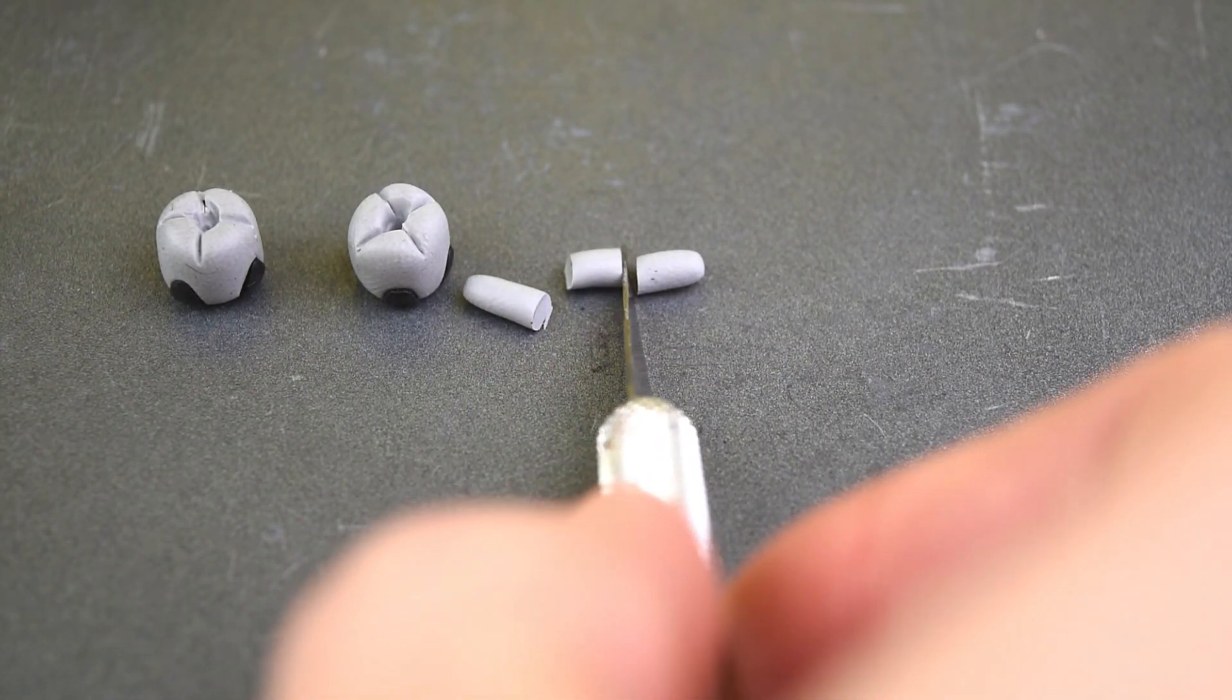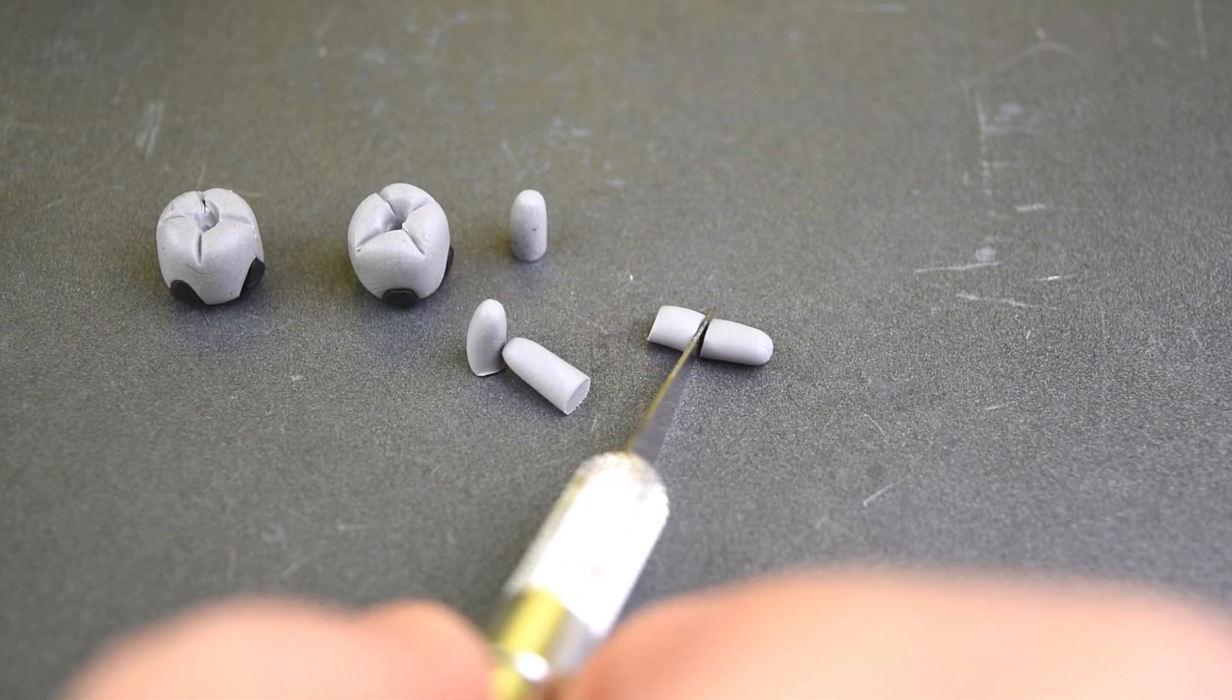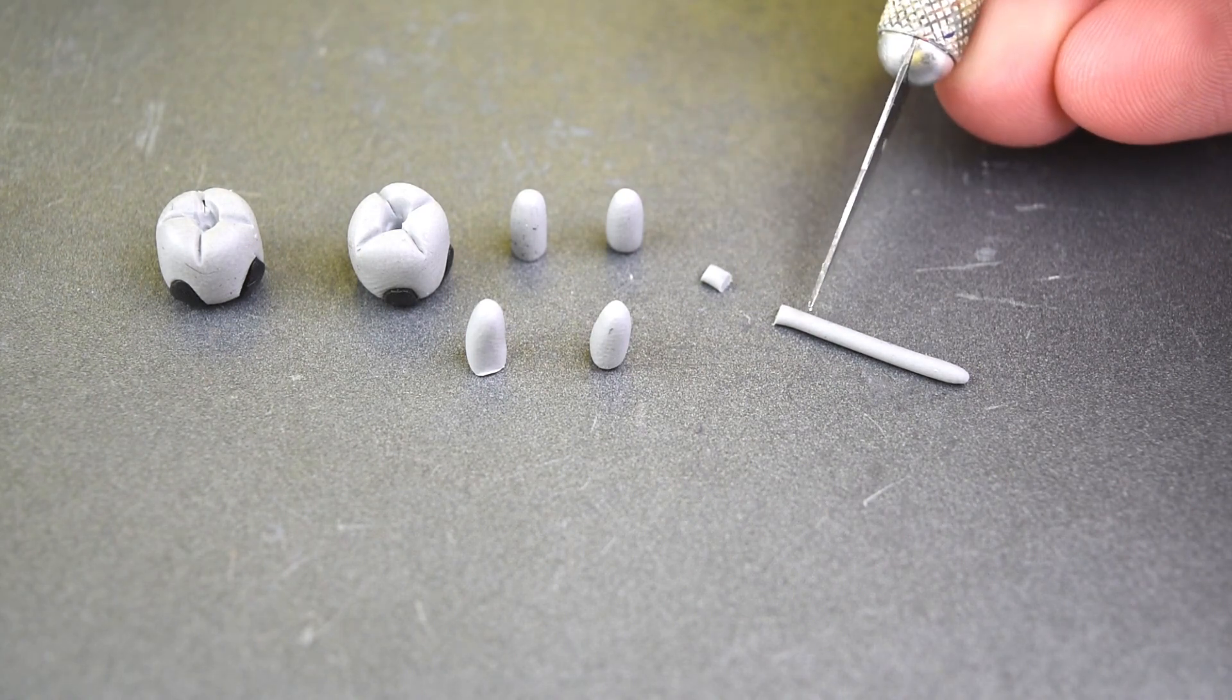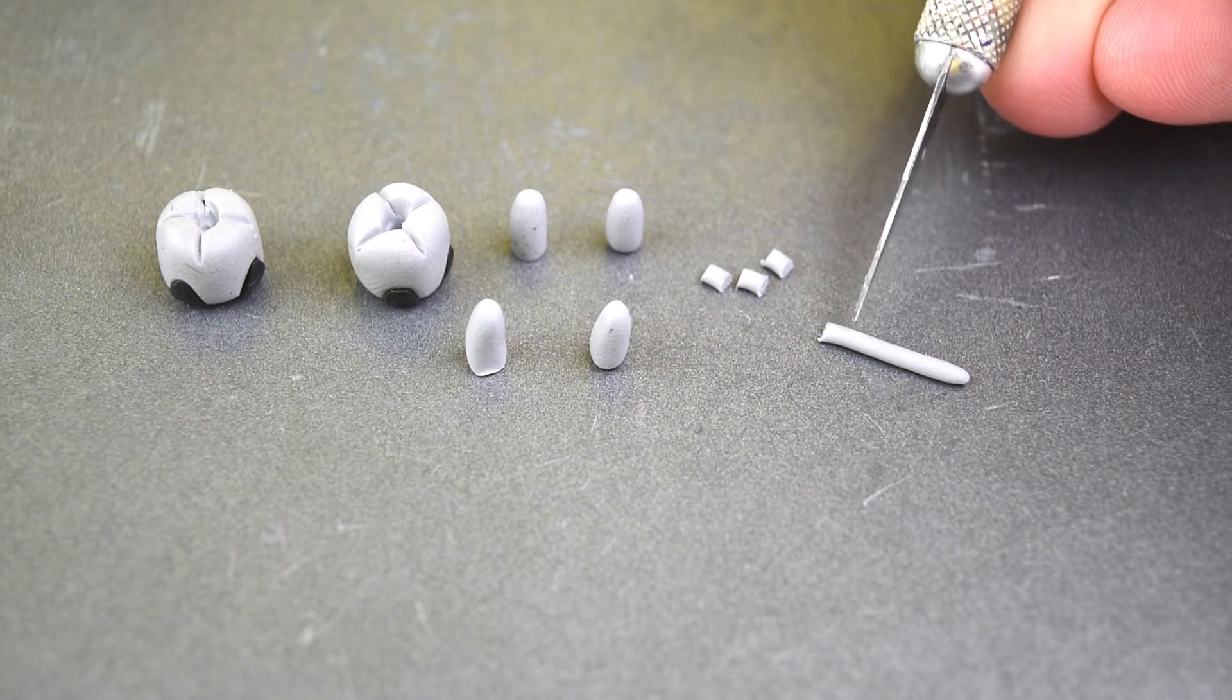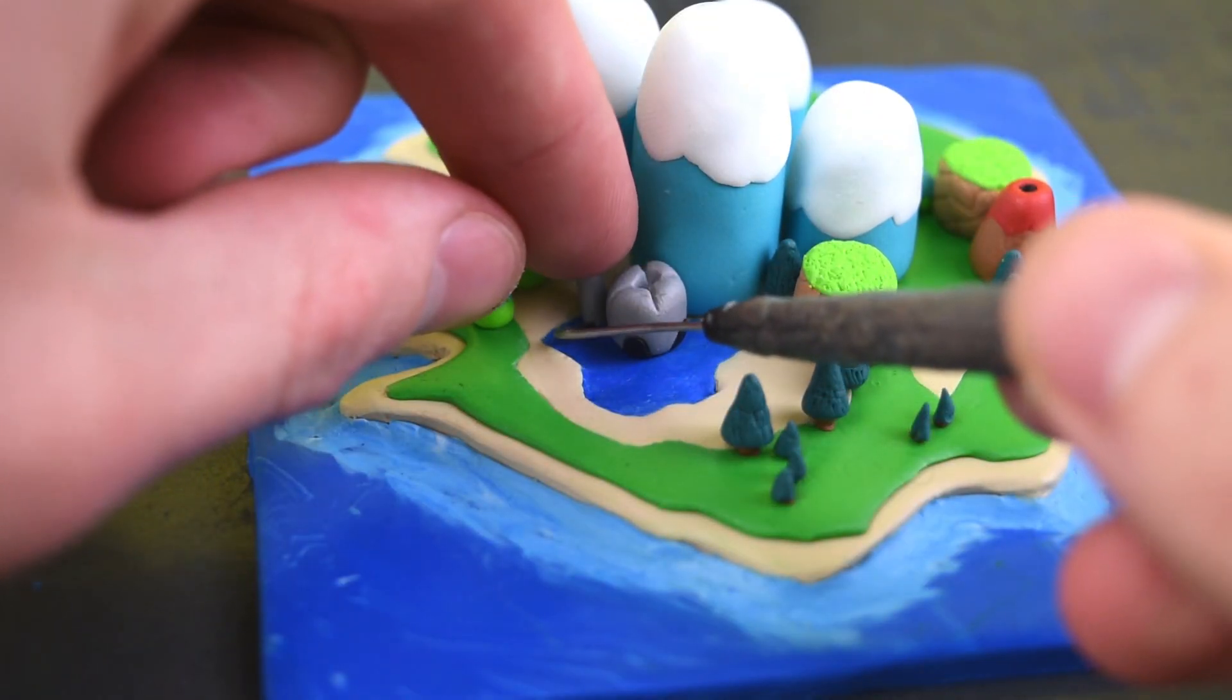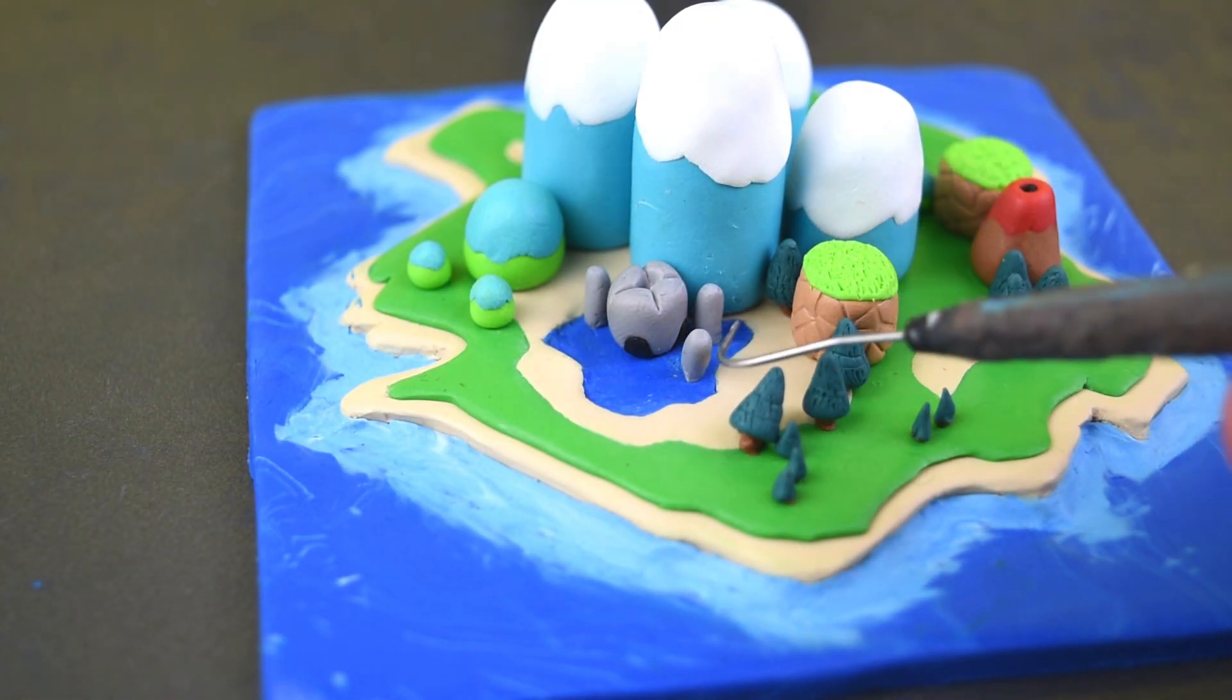And we also have these little towers. There's four towers going around the castle, but only going around the castle that's in the water. And again, we will create the different details on it using a marker after we bake it.